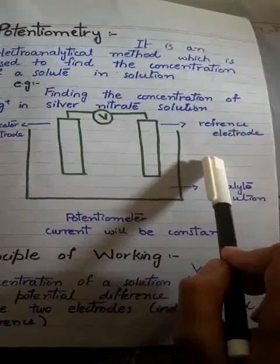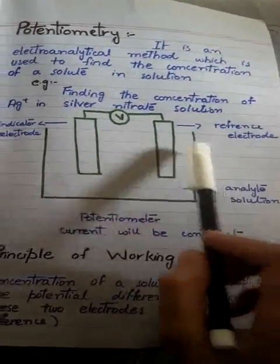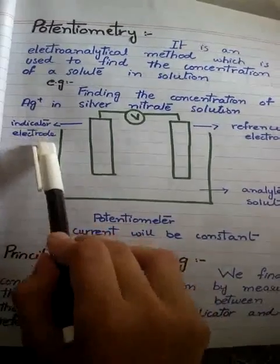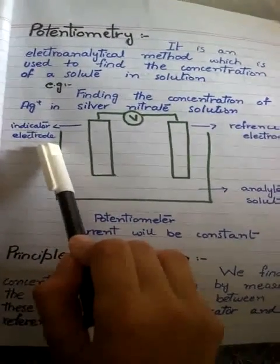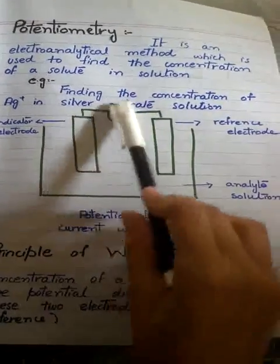Reference electrode is an electrode whose concentration or potential is known to us, whereas the indicator electrode is an electrode whose concentration or potential is unknown to us, and both are connected by a voltmeter.